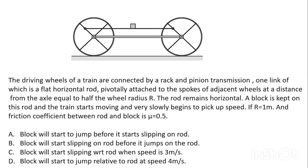Welcome back dear students. Today we are going to take another good question from physics pre-score test series paper 2. The question says that there is an arrangement like this which you might have seen in trains. The driving wheels of the train are connected by a rack and pinion transmission, one link of which is a flat horizontal rod, pivotally attached to the spokes of adjacent wheels at a distance from the axle equal to half the wheel radius.